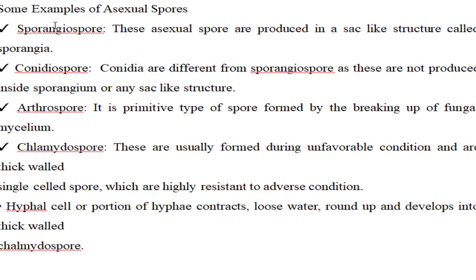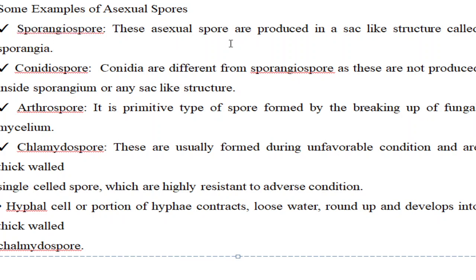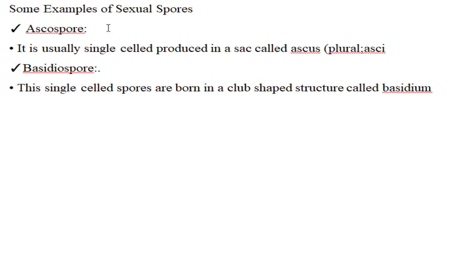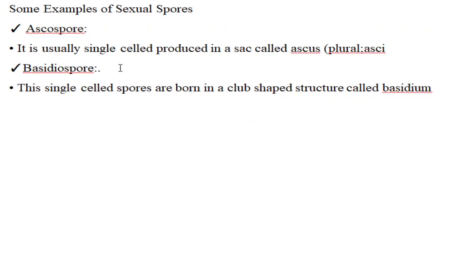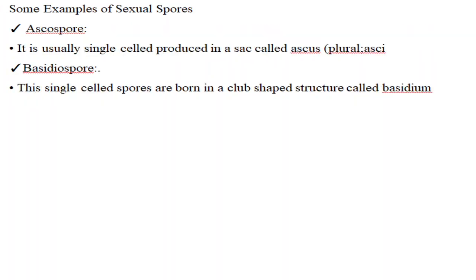The next question concerns fungal spores. Examples of asexual spores include sporangiospores and conidia. Sporangiospore is asexual and enclosed in a sac-like structure called a sporangium — this is the correct answer. Ascospore is a sexual spore, so option B can be eliminated. Basidiospore is also a sexual spore enclosed in a basidium, but the option states it is not enclosed — so that can be eliminated. Conidiospore is asexual but not enclosed in any sac, though it was listed as sexual — also incorrect. The correct answer is sporangiospore.